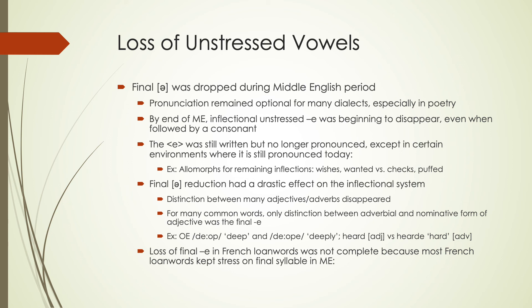A lot of French loanwords still kept stress on the final syllable in Middle English, which is why we see the preservation of final vowels in some cases. For example, 'city' and 'purity' — we still pronounce those final vowels today, though they're a different vowel due to other sound changes. This is because of those French loanwords that we were still pronouncing with final vowels.